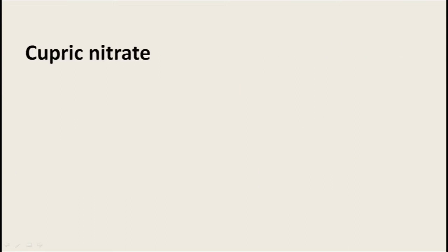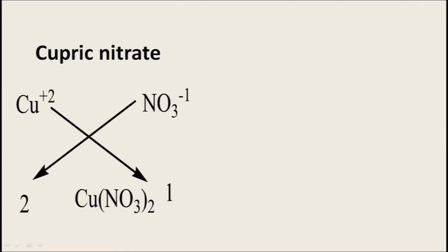The next compound is cupric nitrate: cupric Cu has charge +2 and nitrate NO₃ has charge -1. By the crisscross method, Cu takes 1 and NO₃ takes 2. Since NO₃ is a compound radical, we write the bracket. The formula becomes Cu(NO₃)₂.